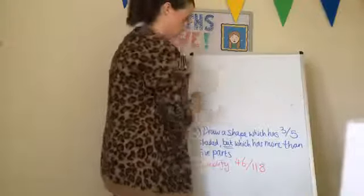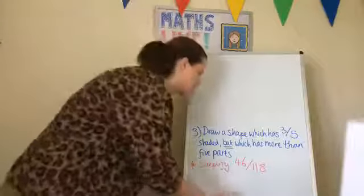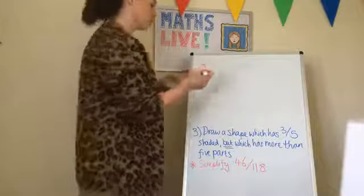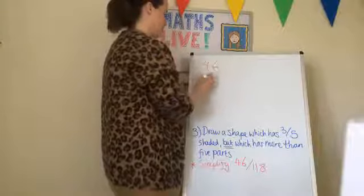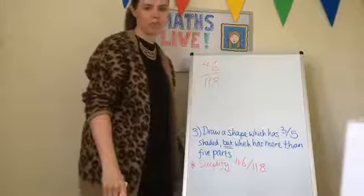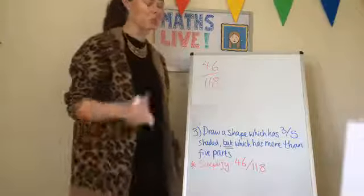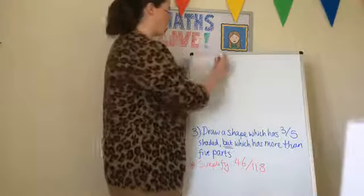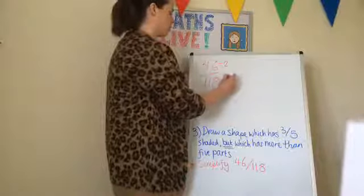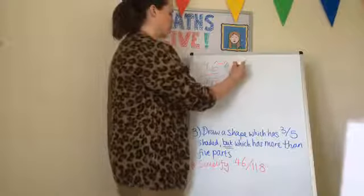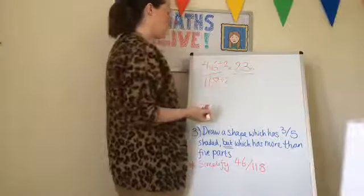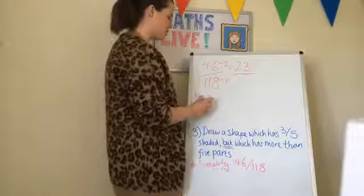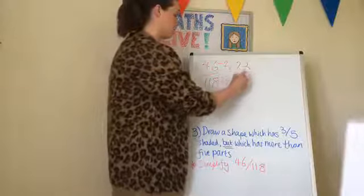For the last challenge question, simplify 46 over 118. I'm challenging myself here because I just thought of two random numbers, so I don't know the answer. I'm just going to do some halving first. Half of 46 is 23. Half of 118: half of 100 is 50, half of 18 is 9, so that must be 59. So I've got 23 over 59.